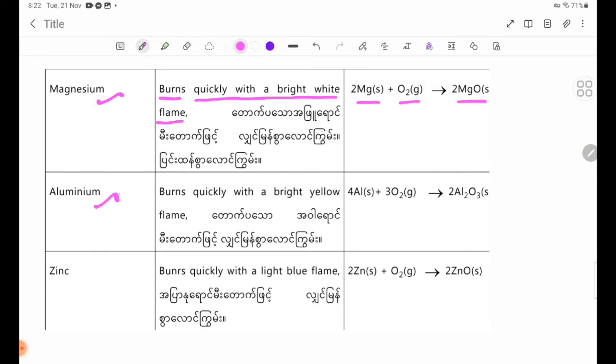Aluminum burns quickly with a bright yellow flame. The reaction is: 4Al(s) + 3O2(g) → 2Al2O3(s).